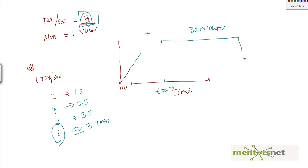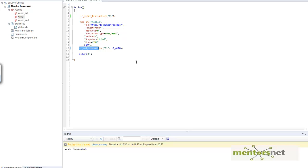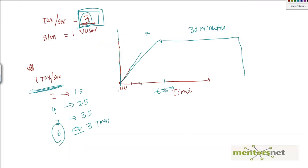Through this iterative trial-and-error process, the LoadRunner controller determines how many virtual users are needed to achieve the target transactions per second. This kind of scenario is very useful when you do not know anything about server characterization, but you do know the script — meaning you know what actions need to be performed. You create a goal-oriented scenario, state your goal, and the controller will achieve that goal by trial and error.